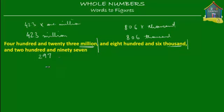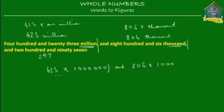So 423 times 1,000,000 means 423 multiplied by 1,000,000. Now 1,000,000 has a 1 and 6 zeros. The next part is 806,000, which is 806 multiplied by 1,000. So this is your 423 multiplied by 1,000,000, then 806 multiplied by 1,000, and lastly the last bit which is 297 — three bits in all.